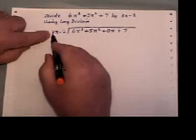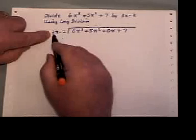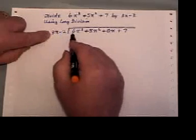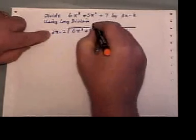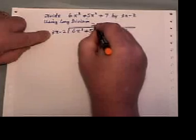Okay, I'm going to take 3x and figure out what do I have to multiply 3x by in order to get 6x cubed. And the answer would be 2x squared.